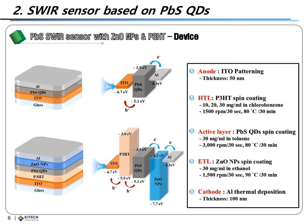To form the electron transport layer, we coated zinc oxide nanoparticle solution on the active layer and heated the substrate at 190°C in a vacuum oven for 30 minutes. Zinc oxide nanoparticles were synthesized by the Sargent method optimized in our laboratory, and they could effectively transfer the electrons formed in the photo-active layer to the aluminum cathode due to their high electron mobility and LUMO level of minus 4.2 eV. Finally, the aluminum cathode was deposited via thermal evaporation in high vacuum using a metal shadow mask.